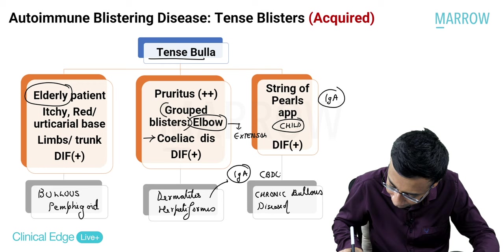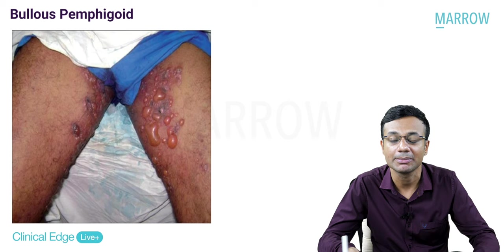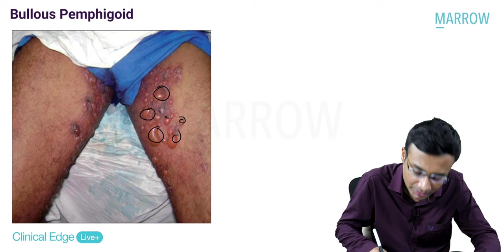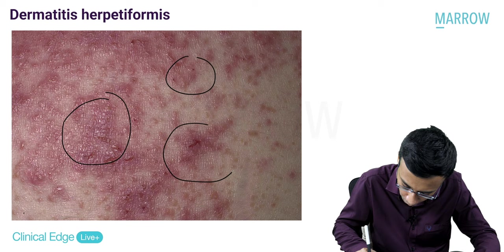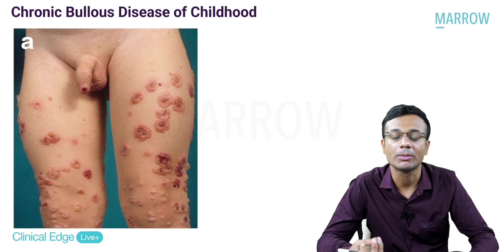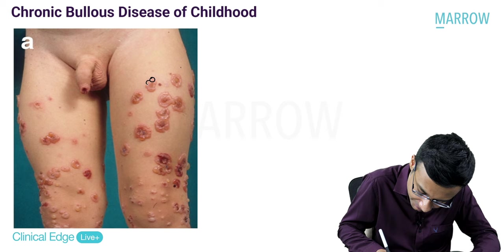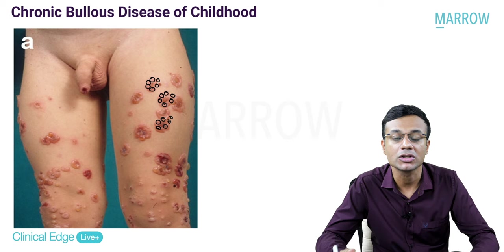The third situation is when a child presents with a string of pearls appearance - vesicles arranged in an annular pattern - also known as cluster of jewel appearance. This is IgA-mediated and called CBDC, Chronic Bullous Disease of Childhood. Dermatitis herpetiformis is extremely pruritic with grouped excoriated lesions over the extensor aspects of the body.